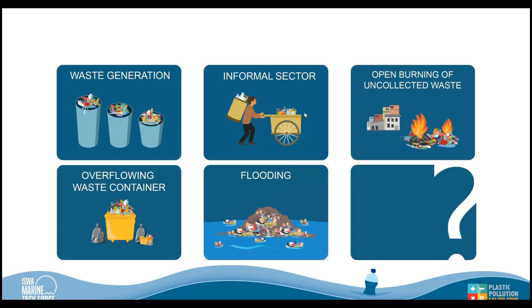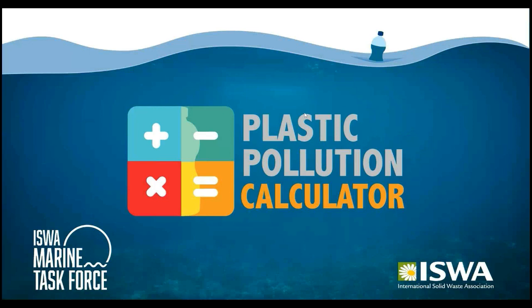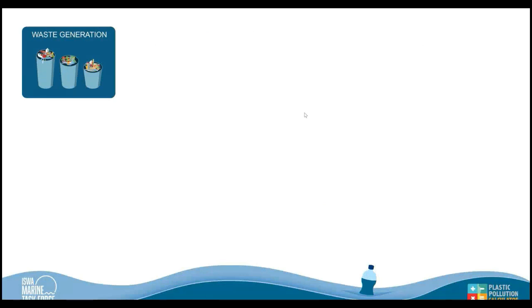We can look at what is in the environment and how it is impacting local infrastructure, such as waste blocking drains and causing flooding. Importantly, we also look at how much plastic is being transported to waterways and therefore becoming marine litter. All of these questions can be answered by the plastic pollution calculator. I'm going to give a quick run-through of some of the results you can expect from it.